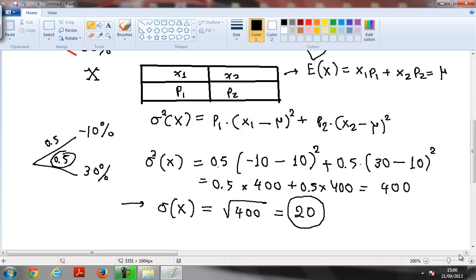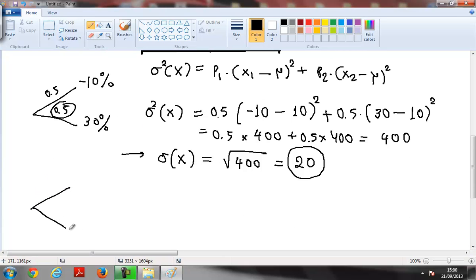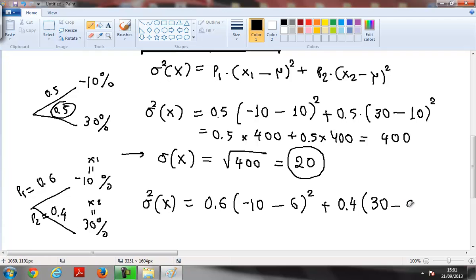You can do the same for the second case. So for the second case we have again the tree with 0.6 probability and 0.4 probability minus 10%, 30%. So what's in that case sigma squared of x? This is p1, p1 is 0.6, p2 is 0.4, x1 is minus 10, x2 is 30. So I have 0.6 and here I have x1 minus 10 minus the mu I found before. Remember that the mu I found before for the second case was 6% plus 0.4 times 30 minus 6 squared.